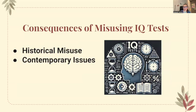The consequences of misusing IQ tests. Throughout history, IQ tests have been used to justify eugenics policies, restrict immigration, and segregate individuals into different educational tracks or employment opportunities based on their perceived innate intelligence. Such practices have perpetuated discrimination and limited access to resources and opportunities — those labeled as having lower intelligence had a stop put to their ability to move forward.